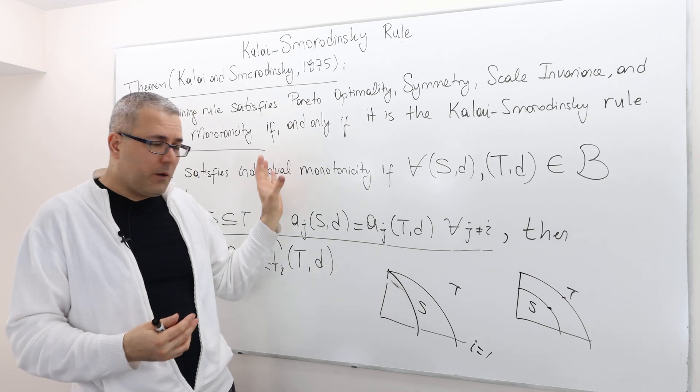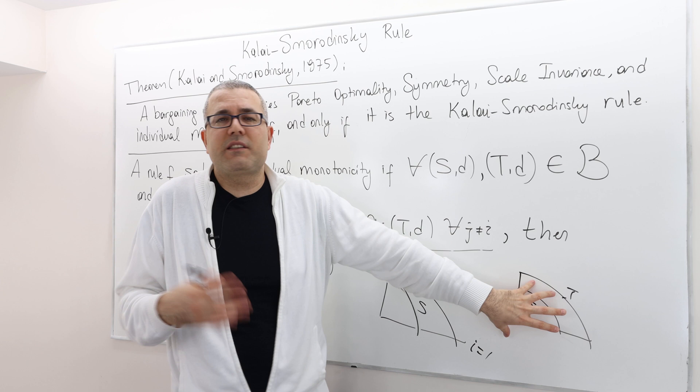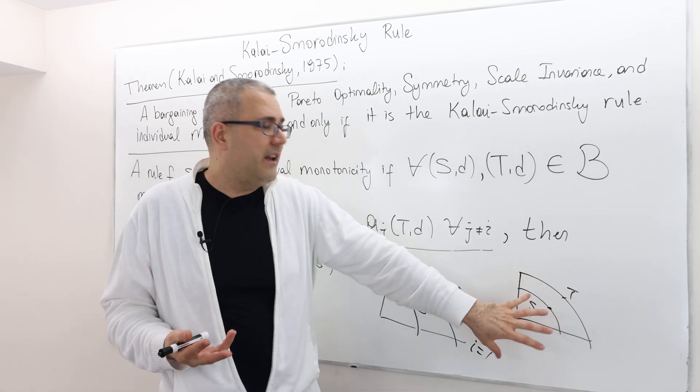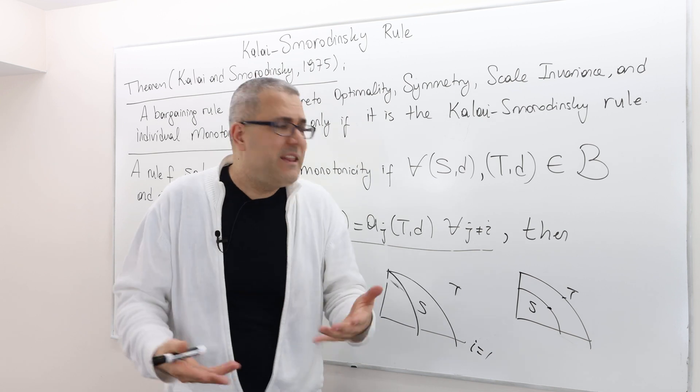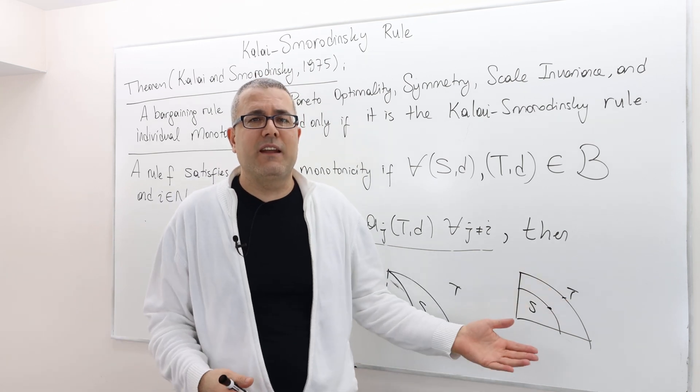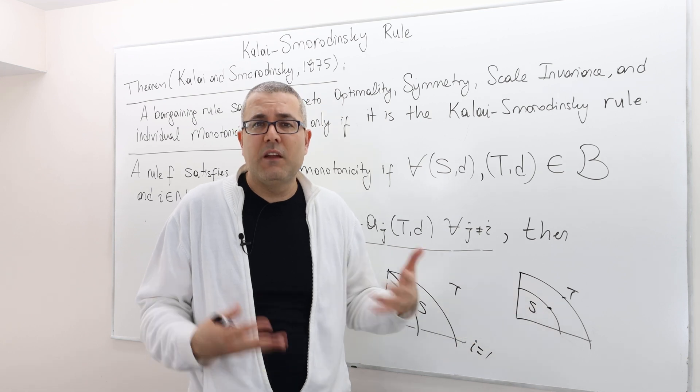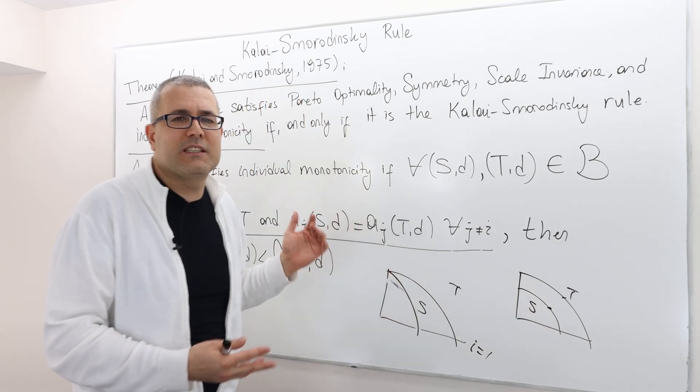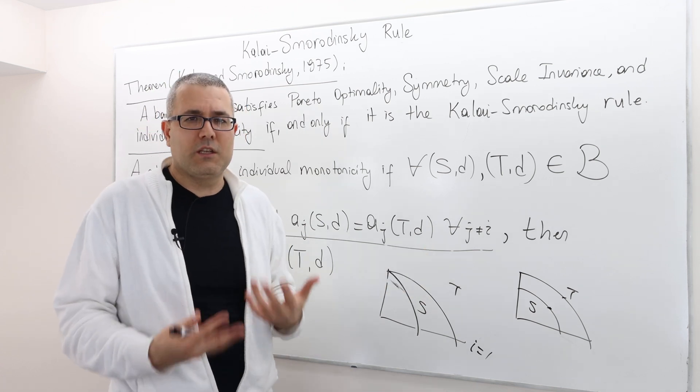So it speaks, so this property speaks only for that sort of situations. It doesn't say anything about these situations, but it doesn't mean that players are not going to get higher payoff in T in comparison to S. They will probably get. It's just this axiom doesn't say, or is just being neutral about those situations.